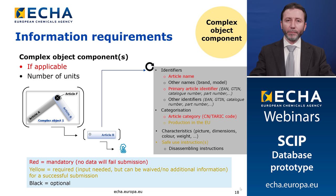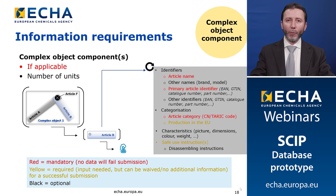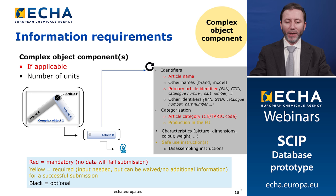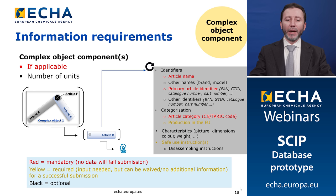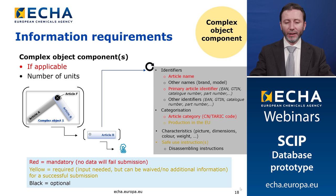If you are notifying a complex object that contains a component which is an article containing a candidate list substance, you need to provide the identification of your product and also provide information for the specific article that contains the candidate list substance. You need to do this for all components or articles that contain the candidate list substance.